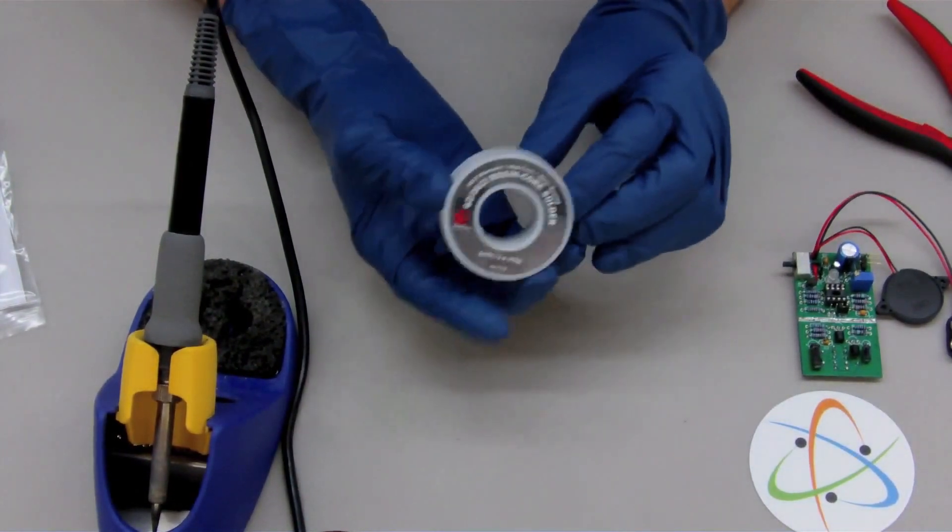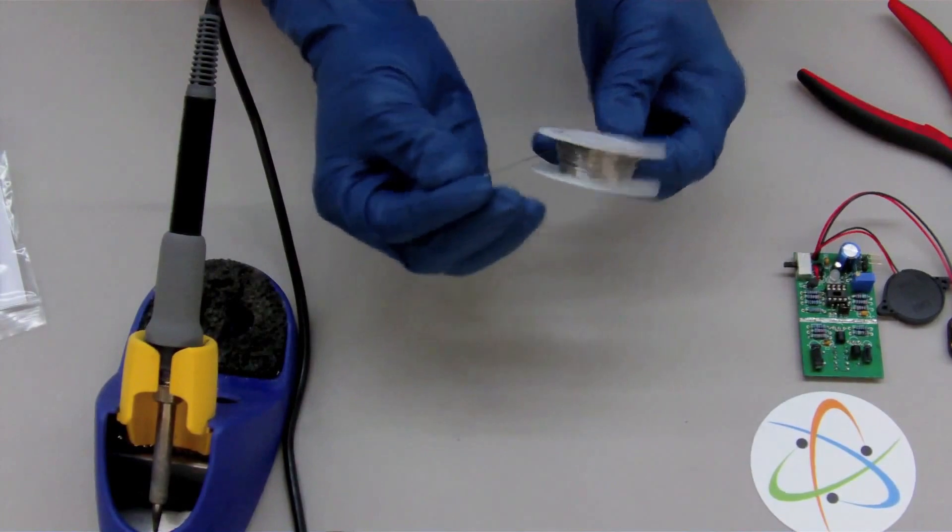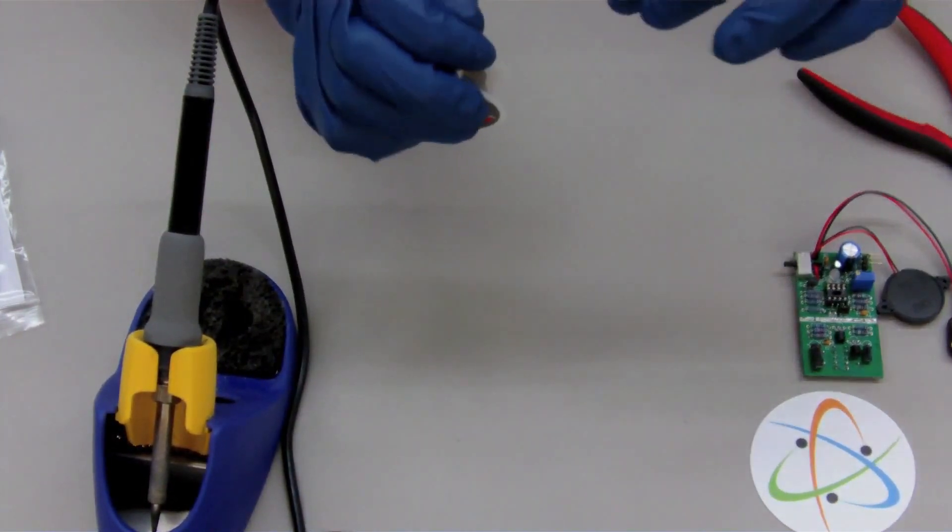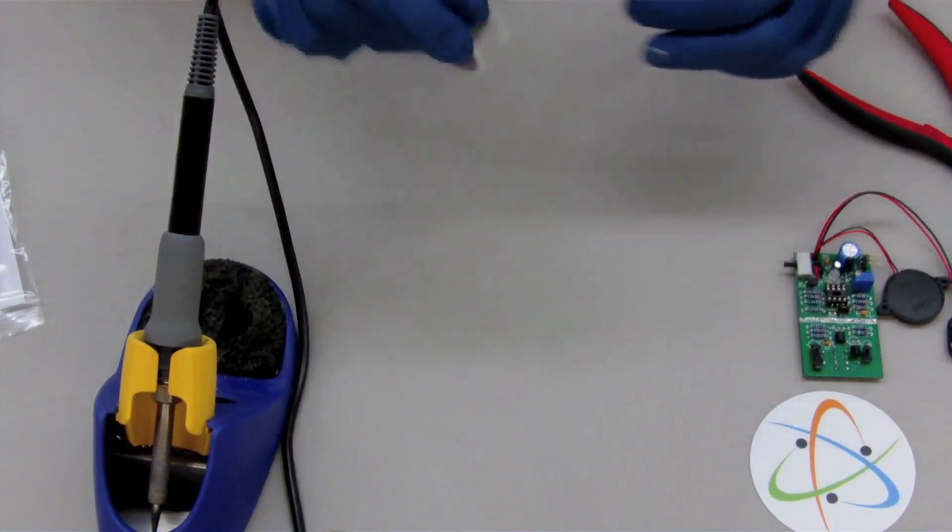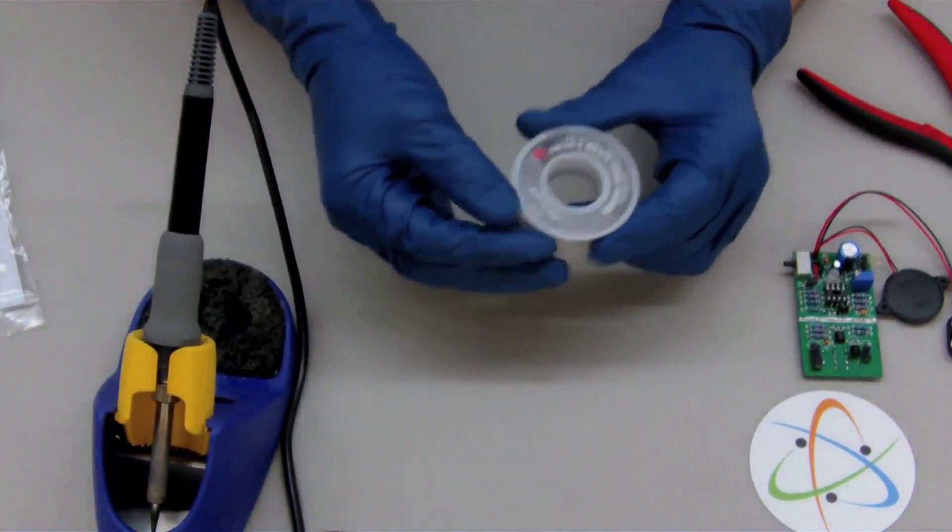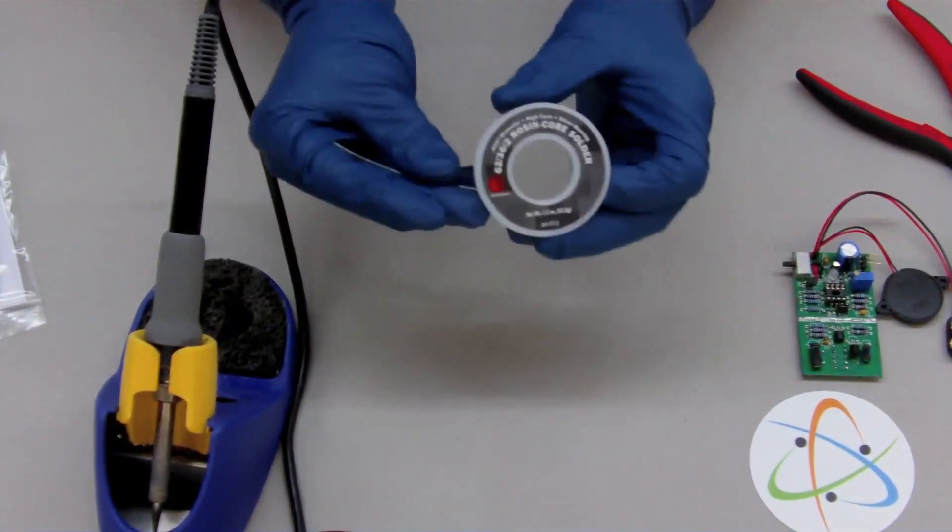And solder, ideally you want a very, very thin wire. This is .022 inch and the thinner is nice because it doesn't overdo it on the amount of solder. Also, if you can get leaded solder where you live, use it. It's much easier to work with.